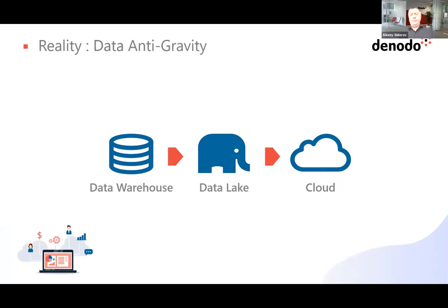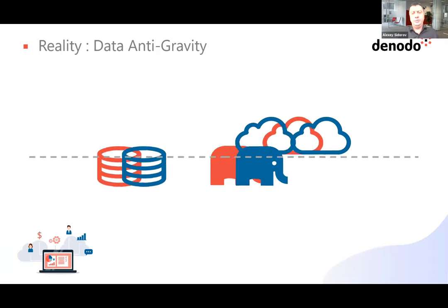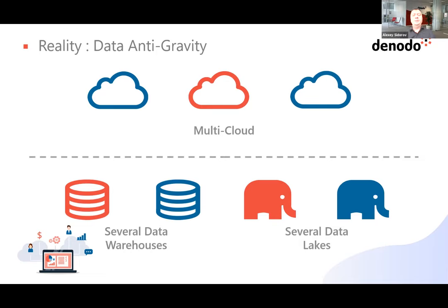The reality currently is that data have the anti-gravity property, not data gravity. Data doesn't want to sit in a single physical location. What we see right now are geographically and technologically distributed architectures. We have data in different clouds, data sitting in different data warehouses — maybe because of mergers or acquisitions. You have several data lakes in the organization; one department has its own data lake and marketing has their own, collecting data for their own purposes. Data sits in different cloud locations under a single cloud service provider, or we use multiple cloud service providers.